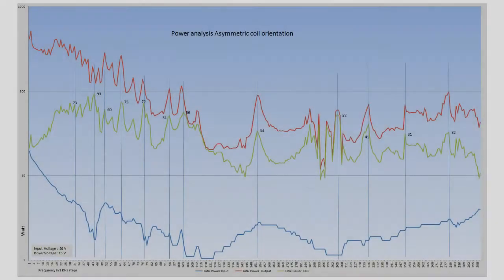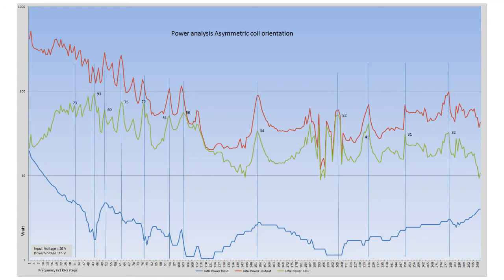Here is the plotted power chart in logarithmic display form. That means you have division by 10 — so 10, 100, 1000 — which makes it much more obvious what is going on. The interesting part is: if you remember from the first video, the highest COP value was 52. Here the highest value is almost twice as much, at 93.